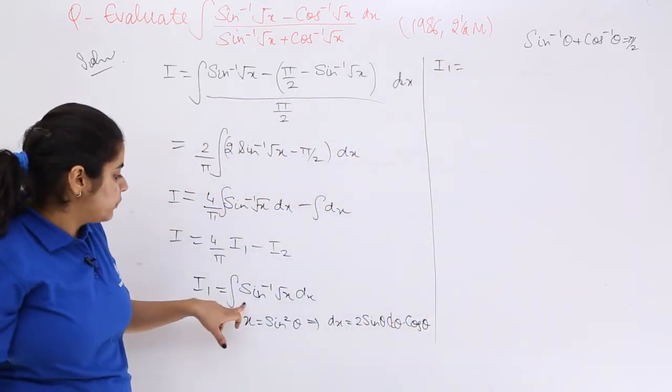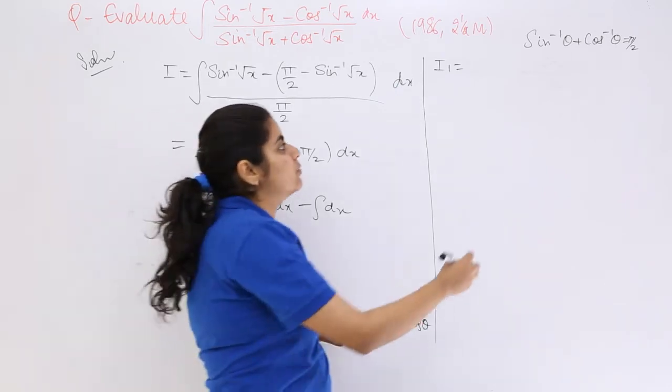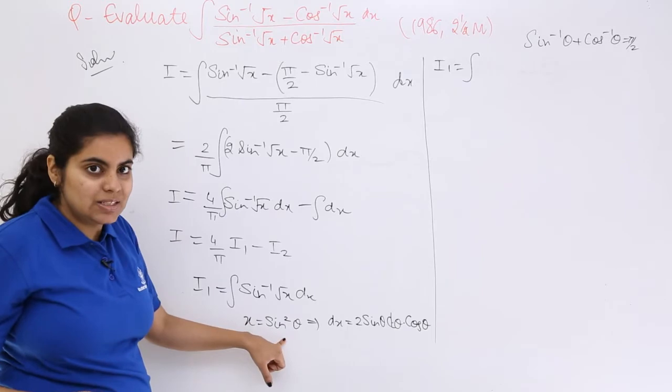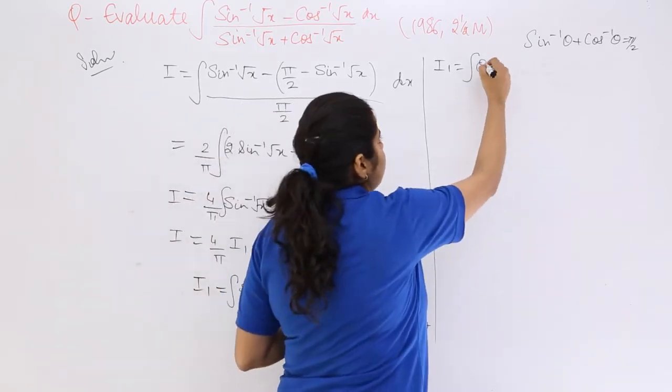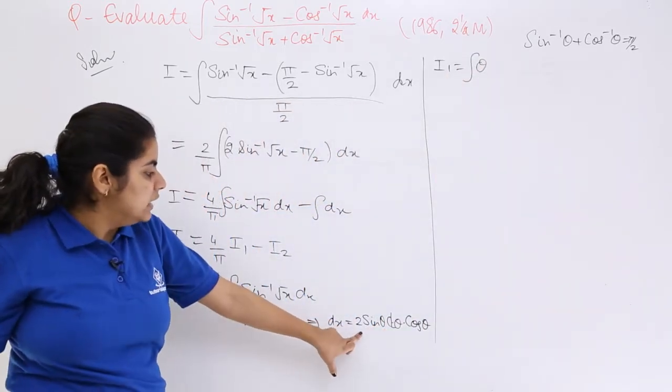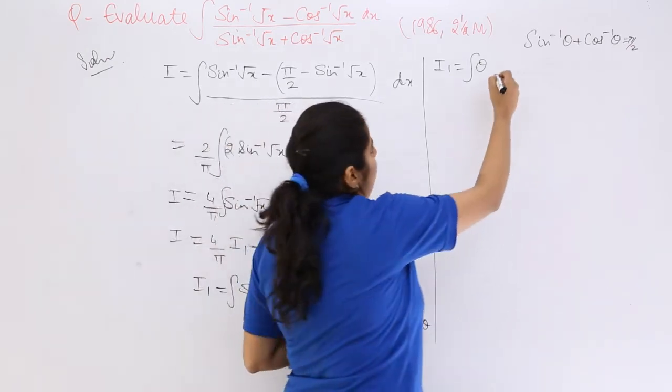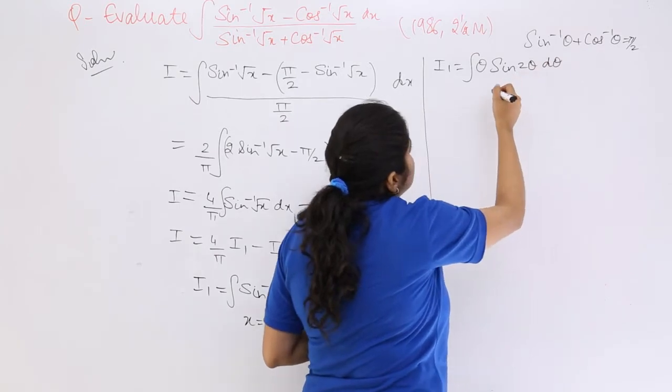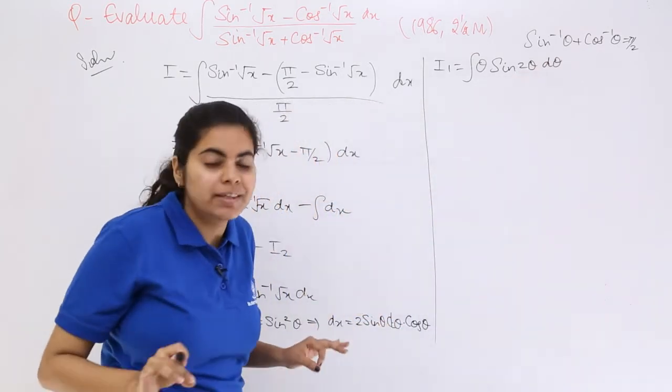Let me see what happens for the further part of the solution. I1 equals integration of sin inverse sin theta, so only theta is left. Next, what is dx? dx equals sin 2 theta d theta.